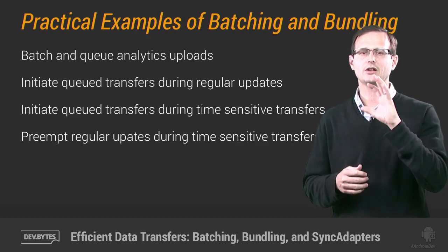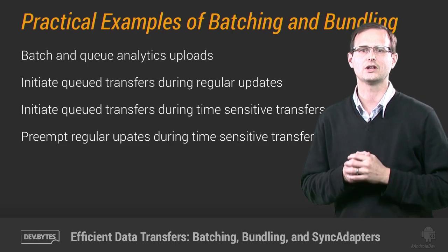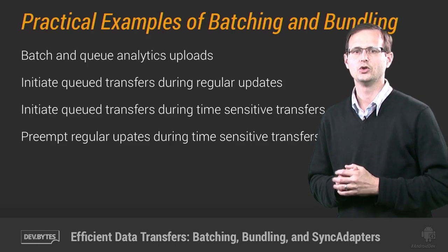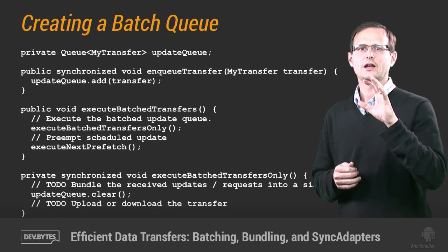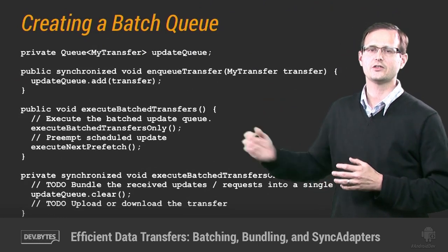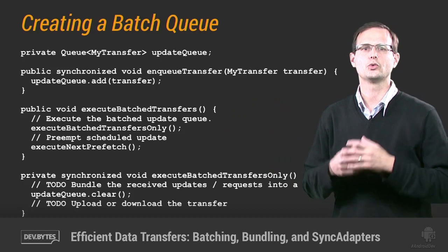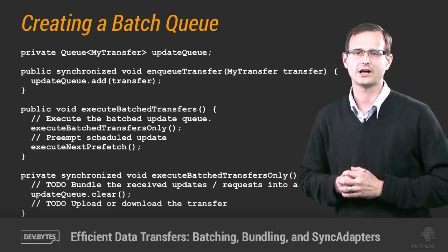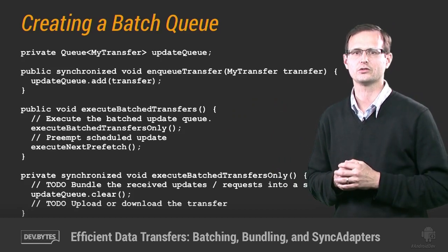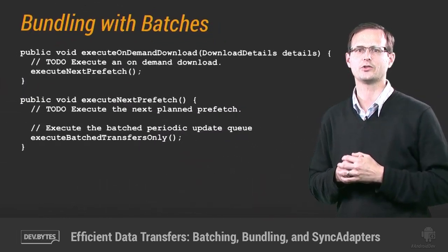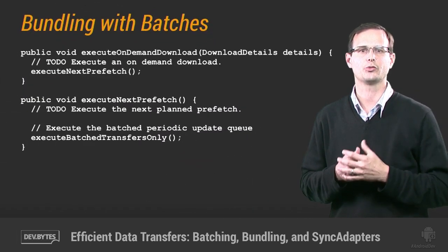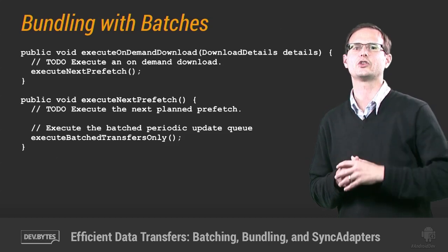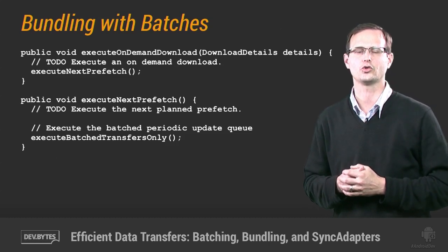So now let's look at some techniques that you can use to implement these best practices. You can start by creating a batch queue to offset those delay-tolerant uploads. This code snippet shows a simple queue to which you can add either upload or download transfers that should occur in the future. Then, whenever you execute a time-sensitive on-demand download or the next periodic update or prefetch is initiated, you can also execute the transfers stored in your queue.